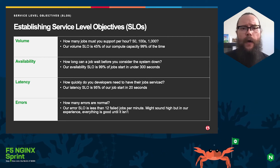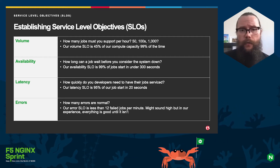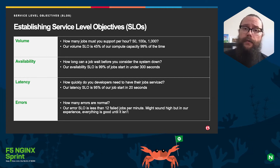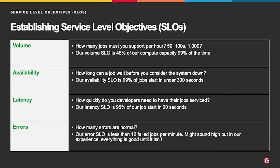First is Volume: how many jobs do you need to support? If you're smaller, fewer; if larger, a lot. You have to think about CPU caps in your region — we've had to raise CPU caps to meet our volume. Our service level objective around volume is that we use 45% of our compute capacity 99% of the time. That allows enough overhead so that when there's heavy development toward releases, or someone kicks off many asynchronous jobs, there's capacity available.